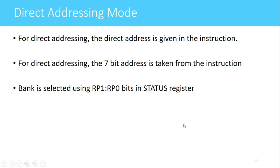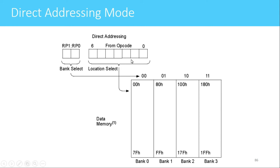For direct addressing, the 7-bit address is taken directly from the instruction. There are four banks in RAM memory: bank 0, 1, 2 and 3. At a time only one bank will be selected. That bank is selected with the help of RP1 and RP0 bits which are present in the status register. In this diagram, we can see a 7-bit address taken from the instruction location and the two bits RP1 and RP0. These two bits decide the bank. In every bank, we have 7F locations, that is a total of 128 bytes.